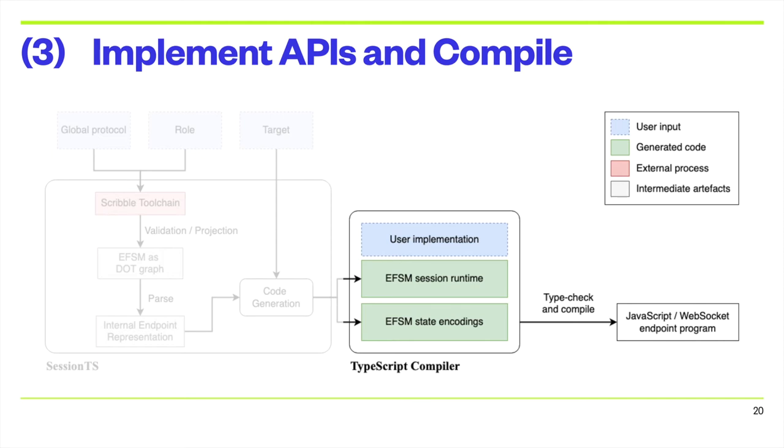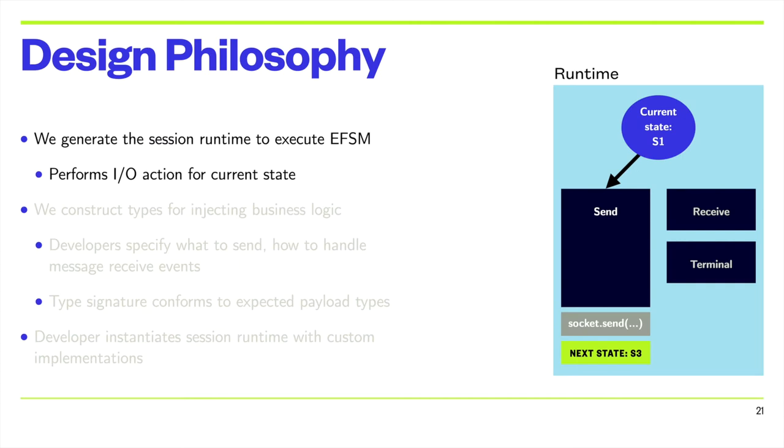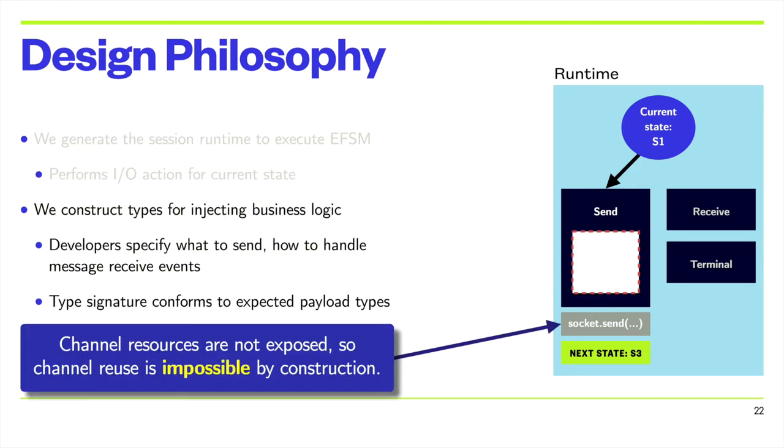The goal is to encode the EFSM for front-end and back-end web applications. The design philosophy is to generate a session runtime to execute the EFSM. The runtime keeps track of the current state, performs the IO action for that state, and transitions to the successor state based on the action performed. We generate APIs for the developer to inject this logic into the execution of the EFSM, specifically how to handle state transitions.